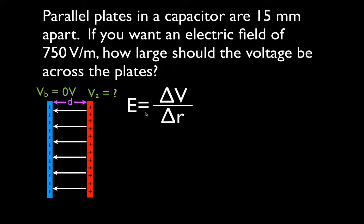the distance is 15 millimeters, we're given that we want to have an electric field of 750 volts per meter, and we want to know what voltage, what potential difference should be placed across those plates.